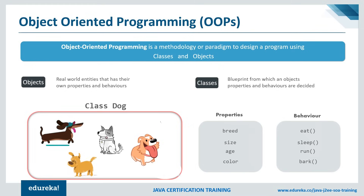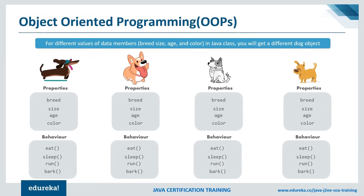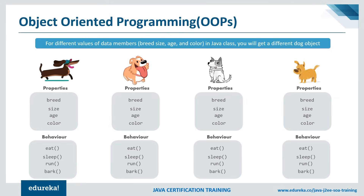Behavior goes like eat, sleep, run, bark, etc. For example, a nose is used for the process called respiration — that's a behavior. So an object has properties and behavior, and these properties and behavior are written in the class to describe the object. Using an object-oriented programming approach, we can have different types of objects — their properties remain the same, but the values for those properties will change.